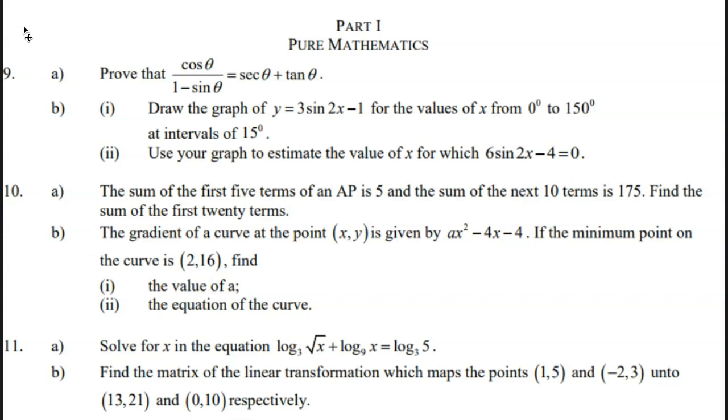Number 10: The sum of the first 5 terms of an AP is 5, and the sum of the next 10 terms is 175. Find the sum of the first 20 terms.